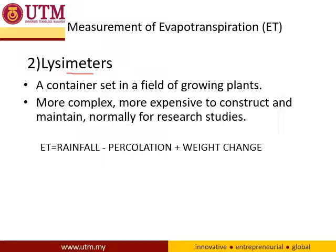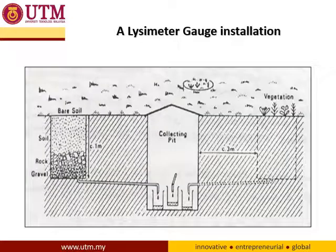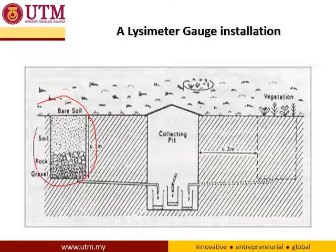A lysimeter is a container set in a field of growing plants — more complex and expensive to construct and maintain, normally used for research studies. It is usually used to study plantations and how much water loss is due to these plants. This is an example where bare soil versus vegetation shows the difference in how much water is collected.